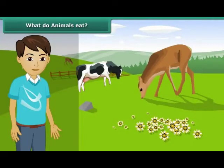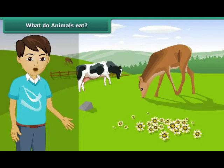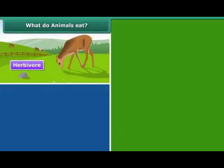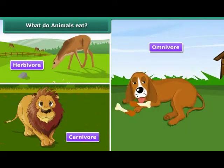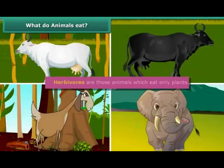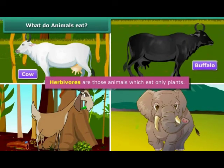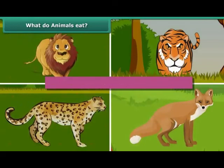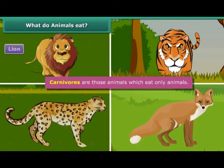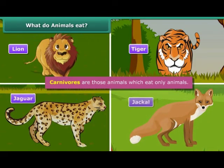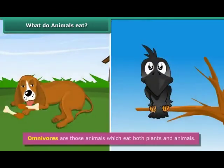Do you know that there are three types of animals on the basis of the nature of food they eat? They are herbivore, carnivore and omnivore. Herbivores are those animals which eat only plants — for example, cow, buffalo, goat, elephant, etc. Carnivores are those animals which eat only animals — for example, lion, tiger, jaguar, jackal, etc. While omnivores are those animals which eat both plants and animals — for example, dog, crow.